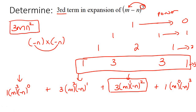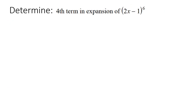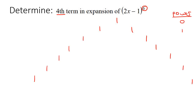Here they want us to find the fourth term. We know that if this is a 6, then we have to go down to row 7 on Pascal's triangle. So here we're going to say power 0, power 1, power 2, power 3, power 4, power 5, power 6. Pascal's triangle always goes one row extra than the power.